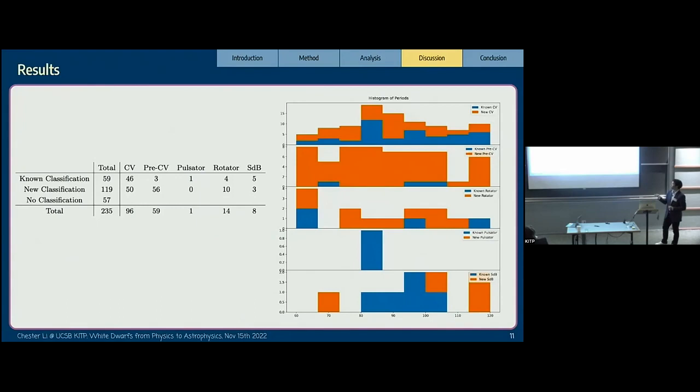Most of the stars we found are actually CVs and pre-CVs. We got one pulsator with a pretty short period that was studied before. We got a few new rotators and a few new STV stars. This histogram shows the period distribution in different categories. We have a lot of periodic signals from 60 minutes to 120 minutes.